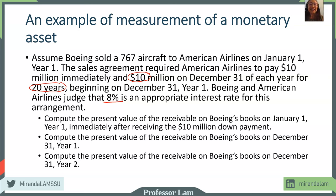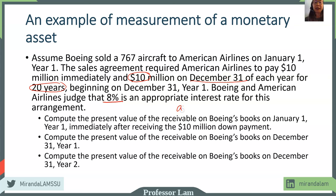This may bring back something from a first finance course, so we'll do a brief review. The $10 million received on January 1st is not an accounts receivable because it's already been paid. On January 1st year one, you have 20 payments left of $10 million each, with the first payment occurring on December 31st. Since the amount is the same — $10 million year after year — occurring at the end of each year for 20 years, the accounts receivable is actually an annuity. We can use Excel to help compute the present value.